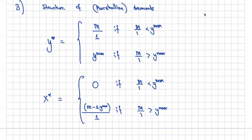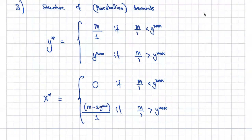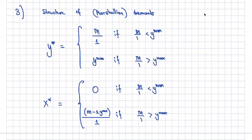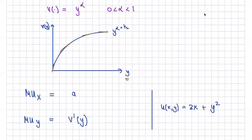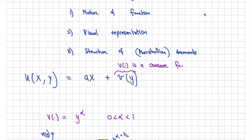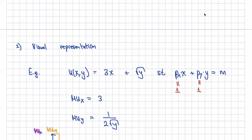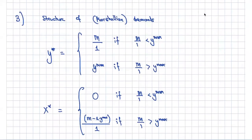This was just to build intuition. I took a simple case where prices are 1, which makes things easy. If prices differ, they'll enter the conditions. I hope that next time you see a quasi-linear utility function, you can quickly identify it, visualize the marginal utility graph, think about where to spend at the margin, and understand the structure of the Marshallian demand. I hope this is helpful — I'll see you in the next video.